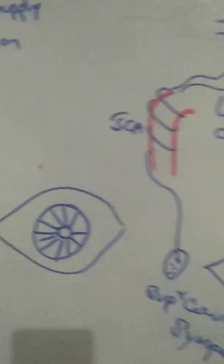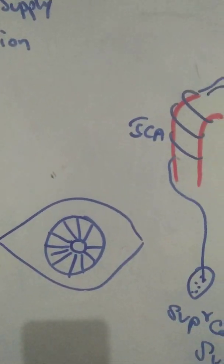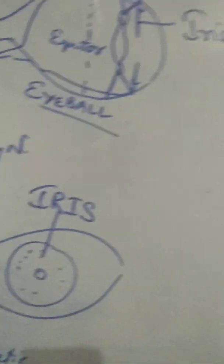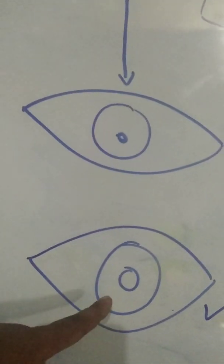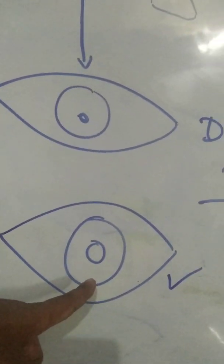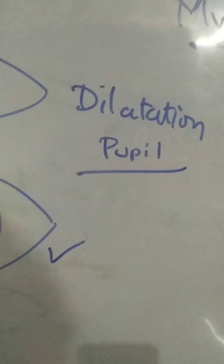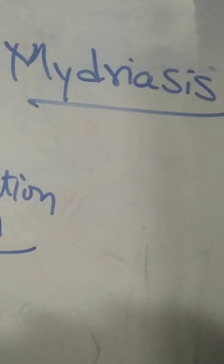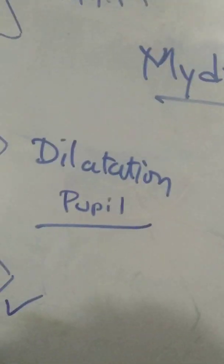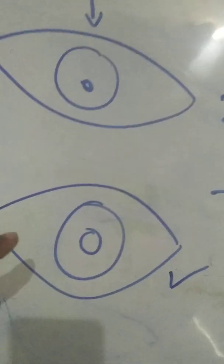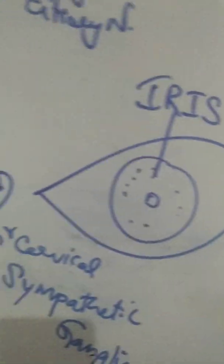Activation of the sympathetic nervous system causes dilatation of the pupil. The medical term for dilatation of the pupil is mydriasis. So the sympathetic nervous system causes mydriasis.